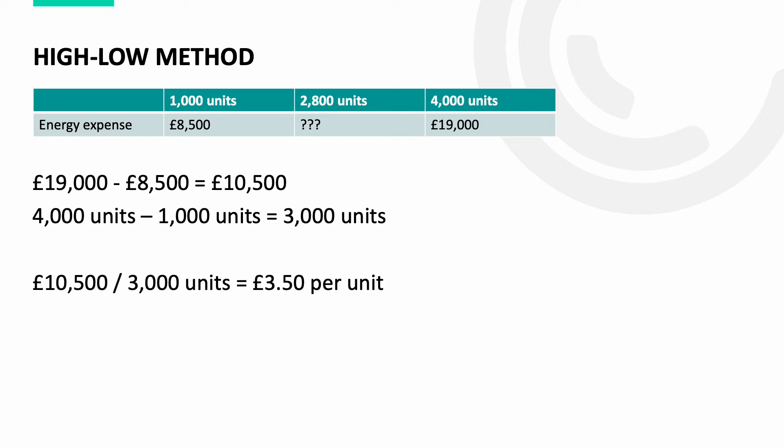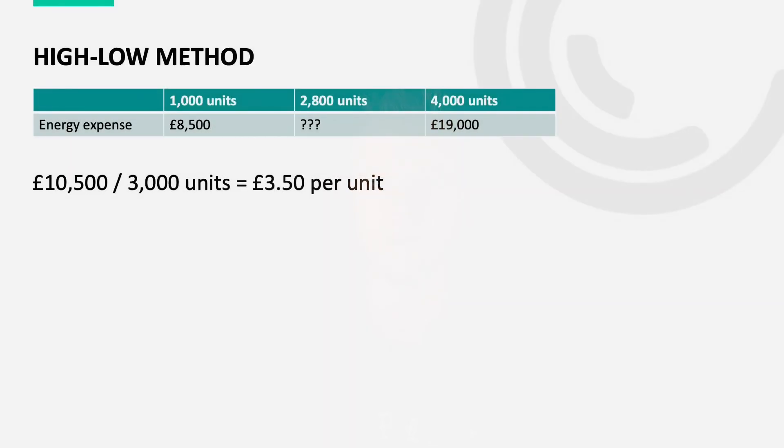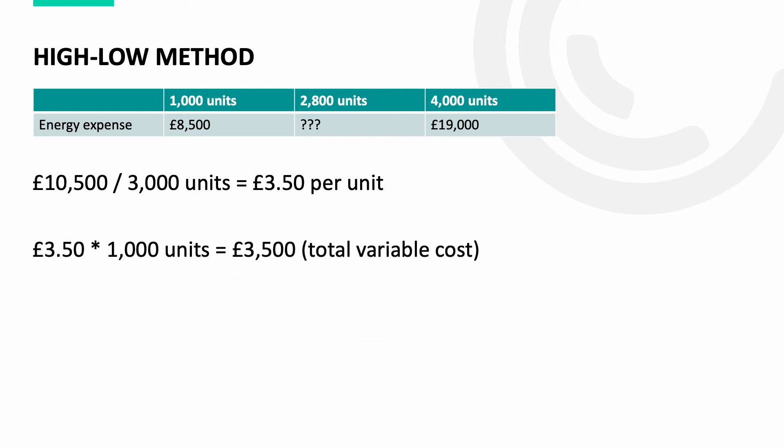The next step is to calculate the variable cost per unit by doing the difference in cost divided by the difference in units: £10,500 divided by 3,000 units equals £3.50 per unit. We can now use this to calculate the total variable cost for 1,000 units by multiplying 1,000 units by £3.50, giving us £3,500 as the total variable element for the 1,000 units.